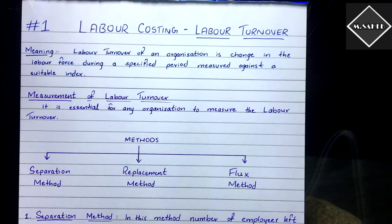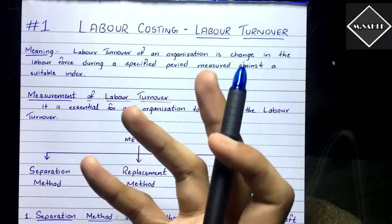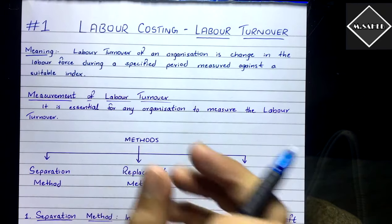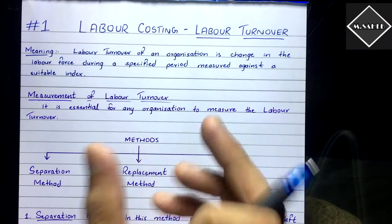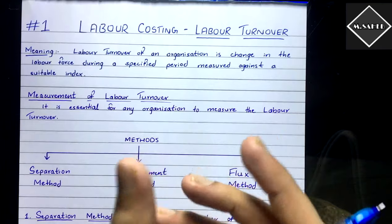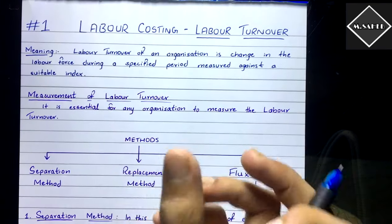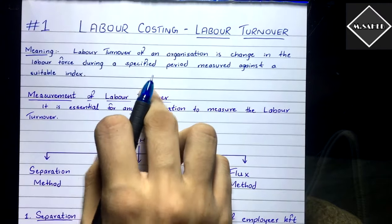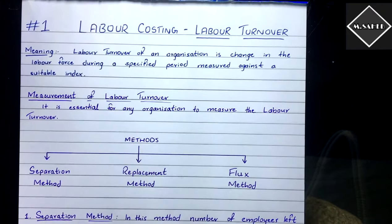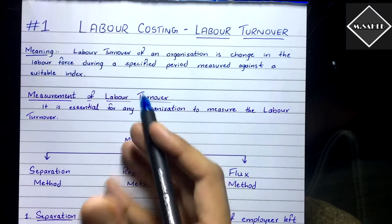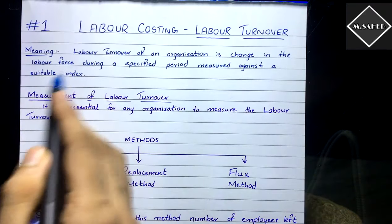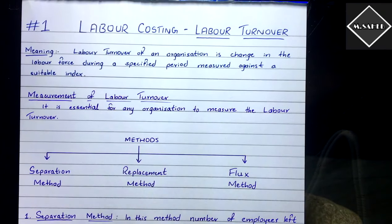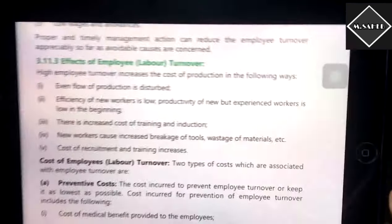Is it a good thing or a bad thing to have high labor turnover? If a company called ABC has 30% labor turnover — and 30% is very high — that means 30% of the labor force is changing in that company. That is a very bad thing.